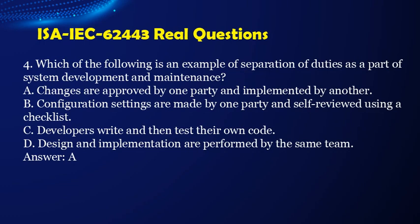Question 4. Which of the following is an example of separation of duties as part of system development and maintenance? a. Changes are approved by one party and implemented by another. b. Configuration settings are made by one party and self-reviewed using a checklist. c. Developers write and then test their own code. d. Design and implementation are performed by the same team. Answer: a.